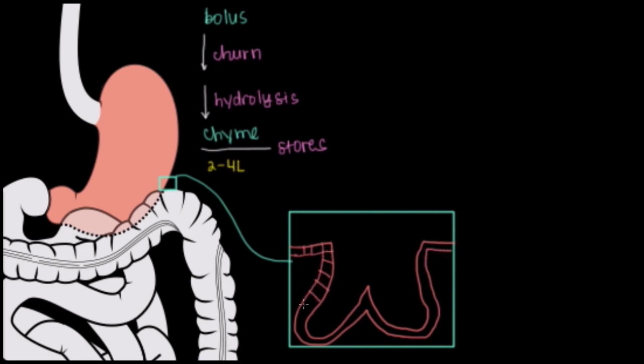This layer of cells actually secretes a lot of the components of the gastric juice we're going to see. And it's nicely ripe with a ton of important components. And the main thing to remember in the stomach is that there are three types of cells that are involved here.